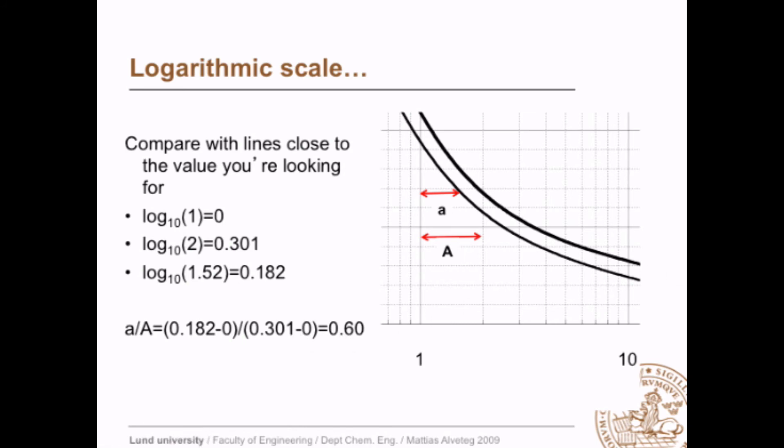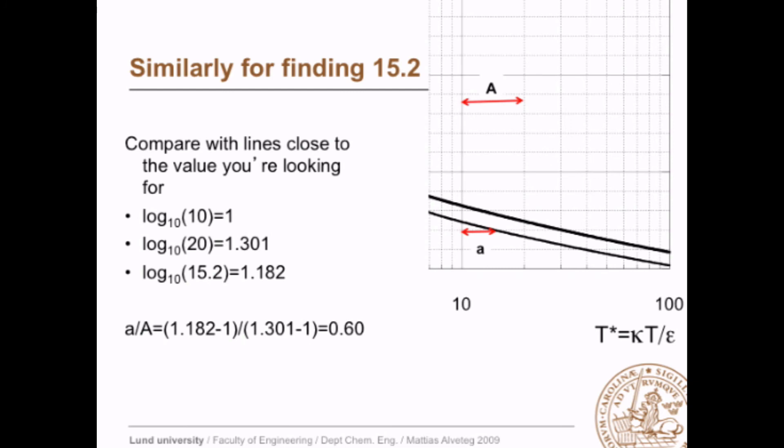So what happens instead if we have 15.2? Well, we get exactly the same result. The logarithm of 15.2 is 1.182. The difference is only that we have a 1 there instead of 0, and we can compare with the line for 20 and the line for 10.